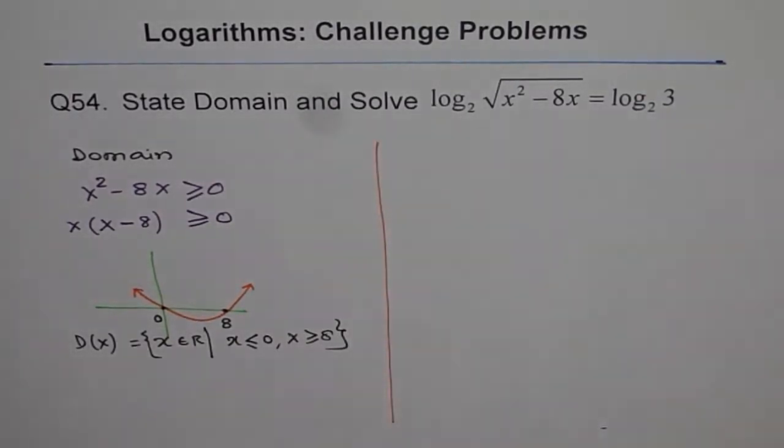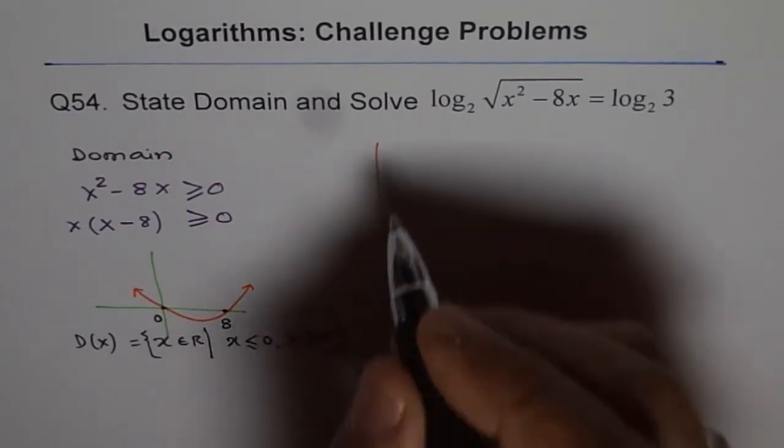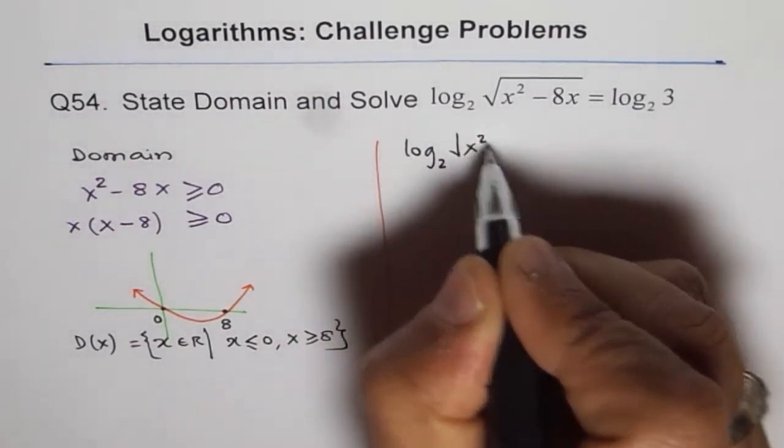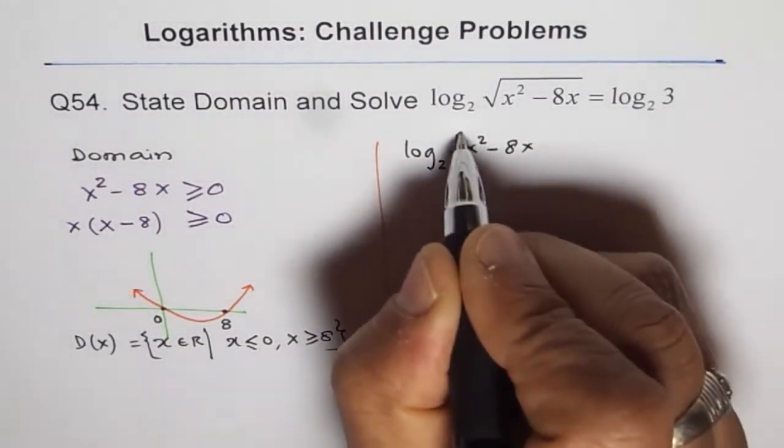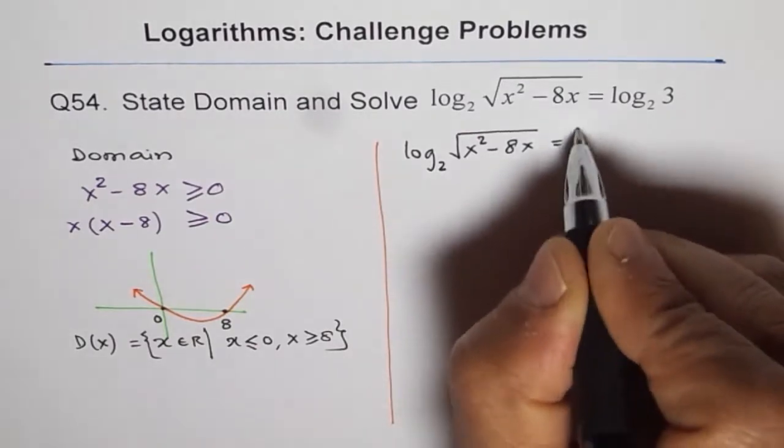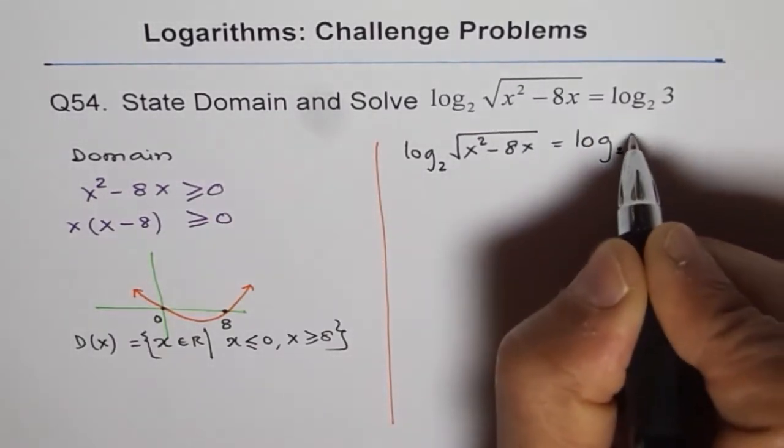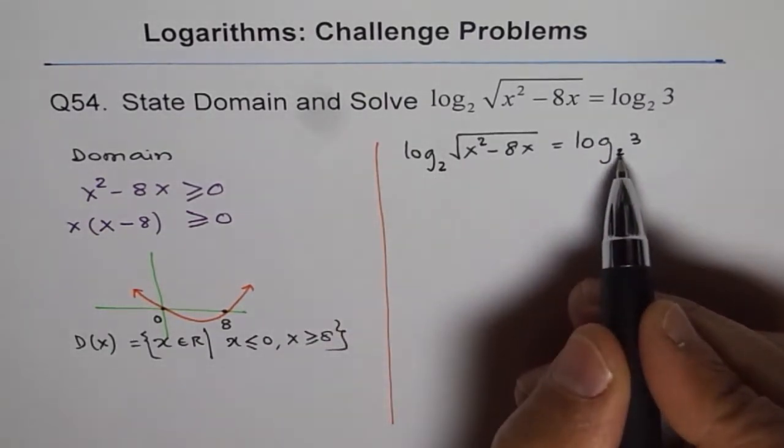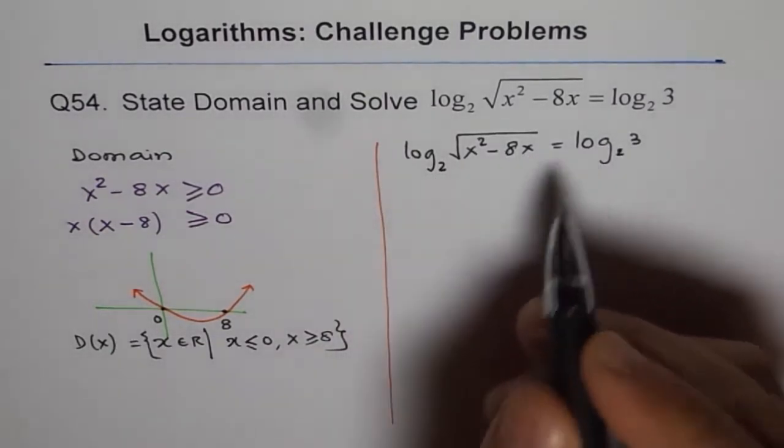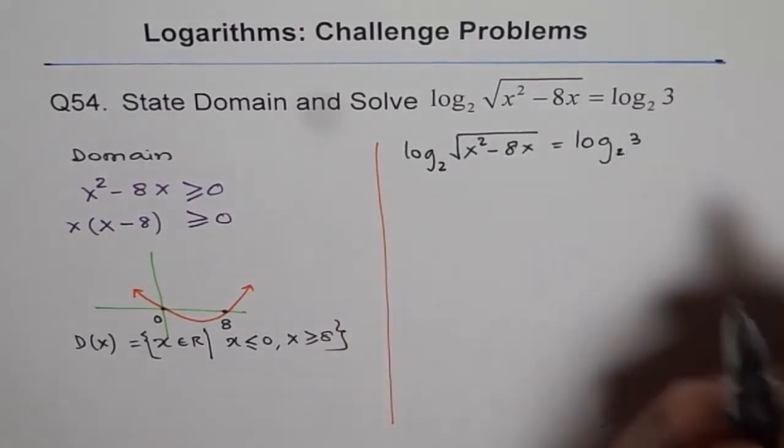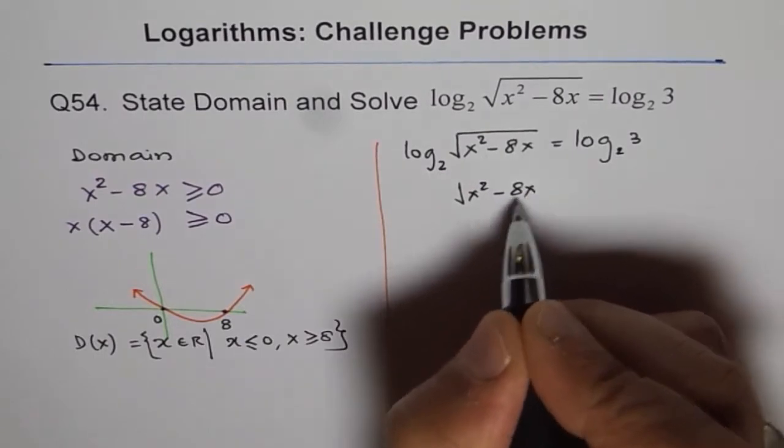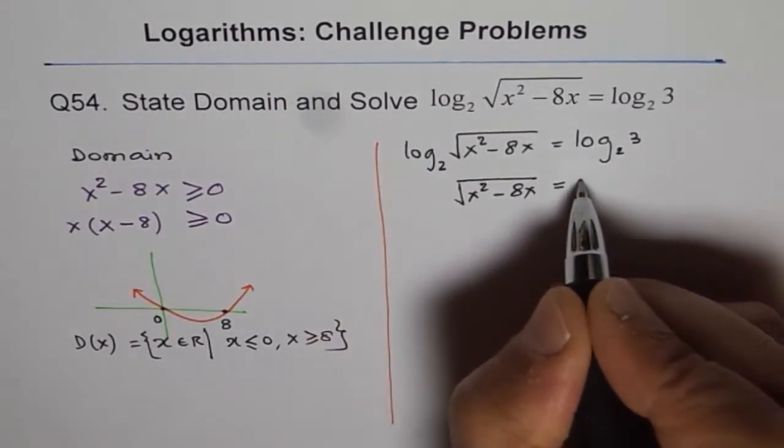And now, let's try to find the solution of this equation. The equation before us is log to the base 2 of square root x squared minus 8x equals log to the base 2 of 3. Now, this is log to the base 2, that is also log to the base 2 and if both are equal, then their argument should be equal. So, therefore, we can write square root x squared minus 8x is equal to 3.